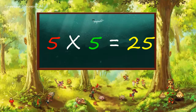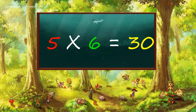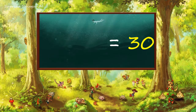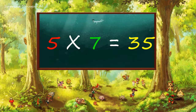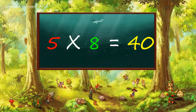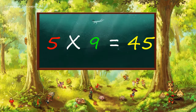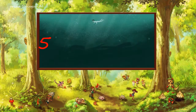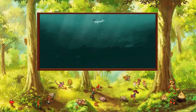Five fives are 25, five six are 30, five sevens are 35, five eights are 40, five nines are 45, five tens are 50.